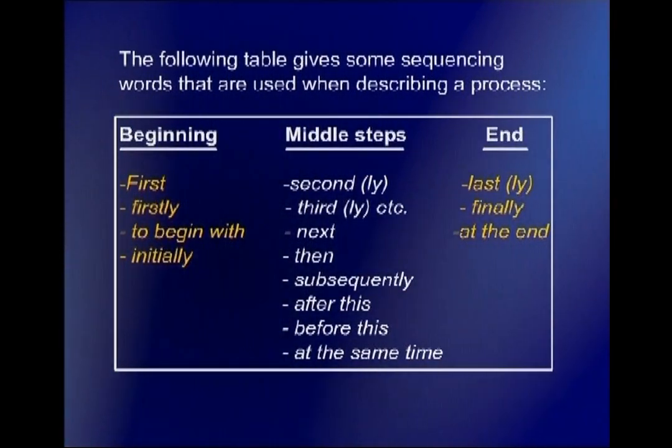Sentence D: 'The laborers put the rice into the threshers.' Again, there is an agent — the laborers. Sentence E: 'The rice is threshed by machines.' There is no agent — that sentence does not say who the doer of the action is. Sentence F: 'These machines are regularly maintained.' In that sentence, no agent is mentioned either. So out of those six sentences, only three had agents mentioned.